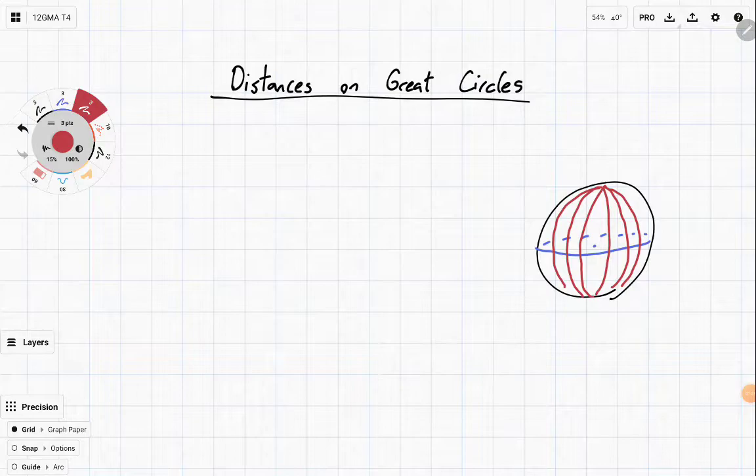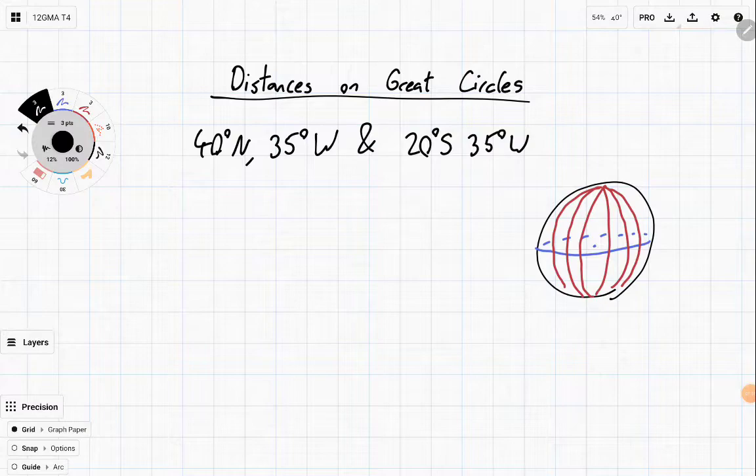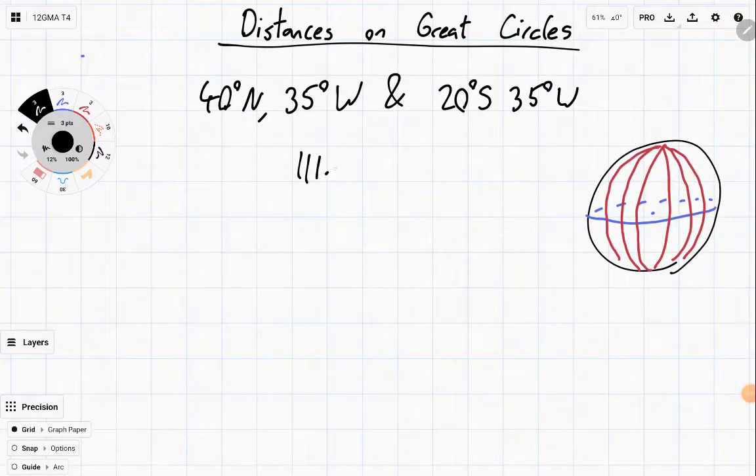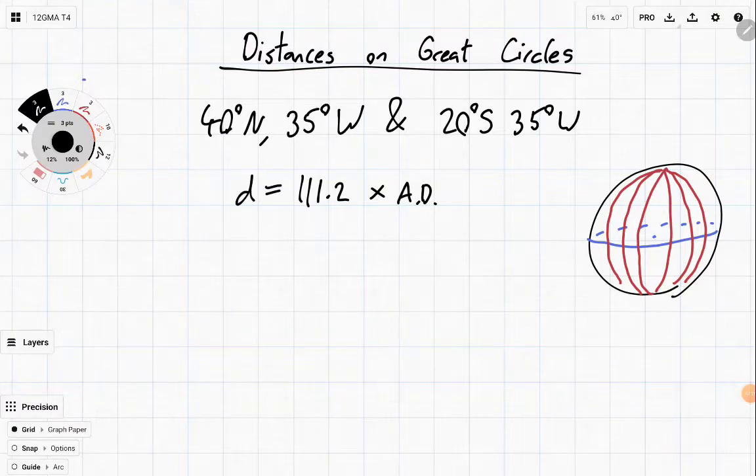So what does this mean for actually calculating it? Well, let's imagine we take two places, let's say 40 degrees north, 35 degrees west, and 20 degrees south, 35 degrees west. Well, since great circles are all the same size, we can actually work out how much a degree is in distance, in kilometres. And each degree on the earth is equal to 111.2 kilometres. One degree equals that. Only on great circles, though. This isn't a general rule. And so we can write this as a formula, which is that the distance is equal to 111.2 times the angular distance, which is our first distance formula. Distance is equal to 111.2 times angular distance.